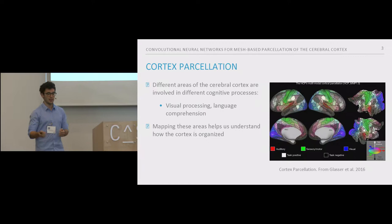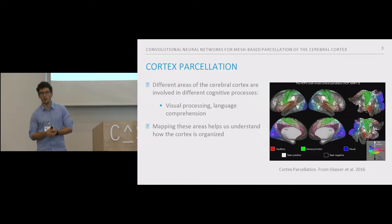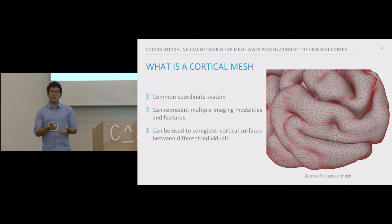What we propose to do in our work is to parcellate the cortex by operating on in-vivo mesh reconstructions of individual surfaces constructed from structural MRIs, which are called cortical meshes. A cortical mesh is a common coordinate system that we can use to represent data coming from different neuroimaging modalities. We can represent data from different features and from different individuals in the same mesh structure.